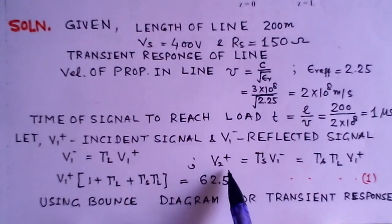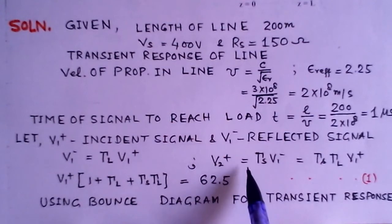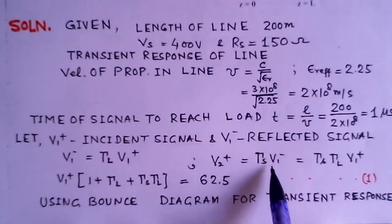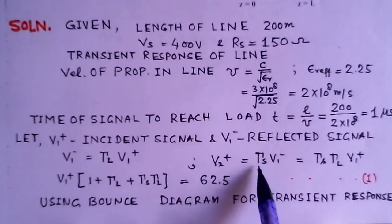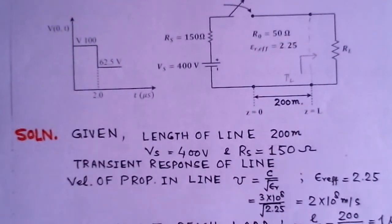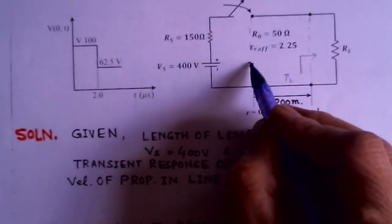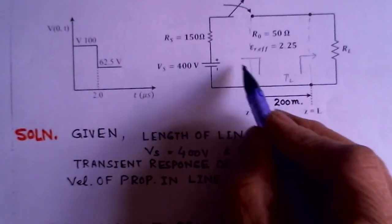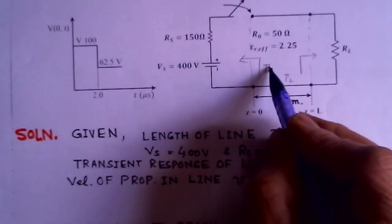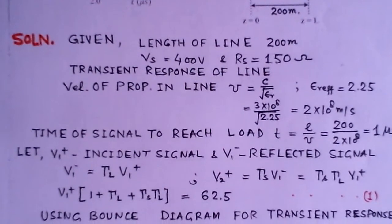Similarly, we can determine V2 plus. V2 plus is the incident signal which is reflected from the source. So gamma L and this is V1 minus. So we can refer here again. This is the source. So if we see at this end, this will be gamma S. This means reflection from the source, that is gamma S.